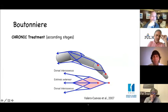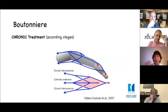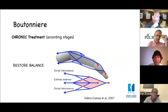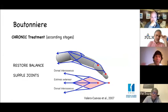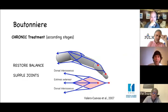The problem is chronic treatment. We treat according to the classification — the stage and the structures affected — and we need to restore balance to the extensor mechanism. But before doing that, we need to have supple joints. If we have a stage 4 rigid joint, we need to address that first, and then restore balance to the extensor mechanism.